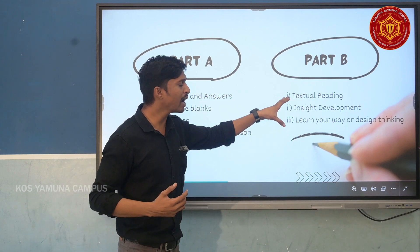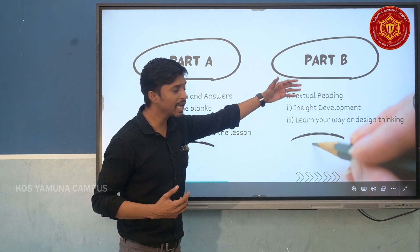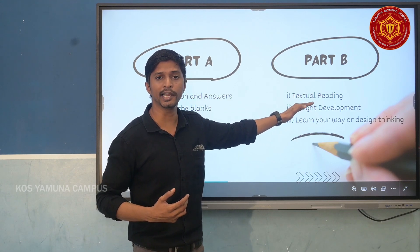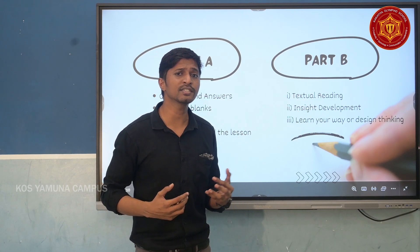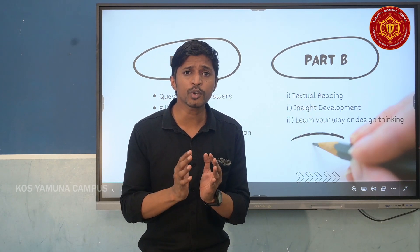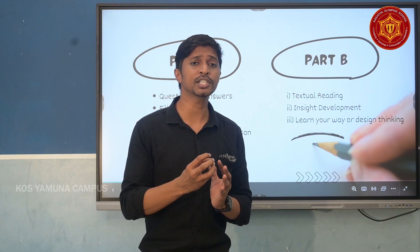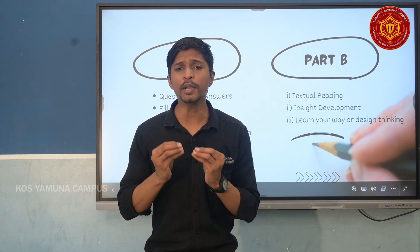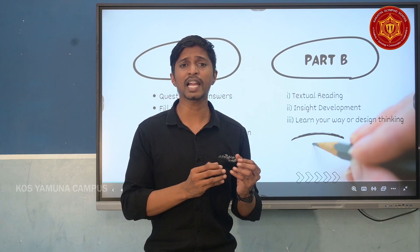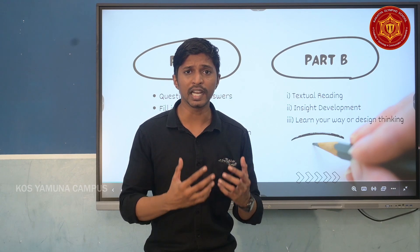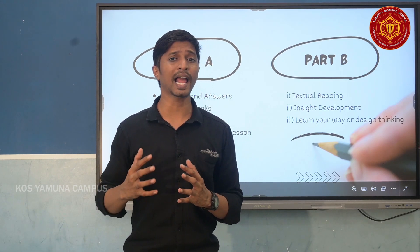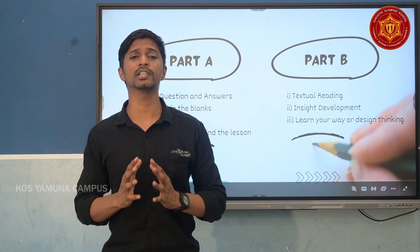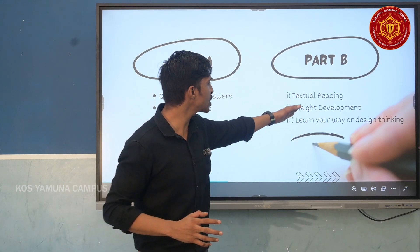When it comes to Part B, it is divided into three parts. The first one is textual reading. Textual reading means you get a question from the middle of the lesson. The student needs to thoroughly understand the concepts of the lesson and listen to the class very clearly to be able to answer these textual reading questions.